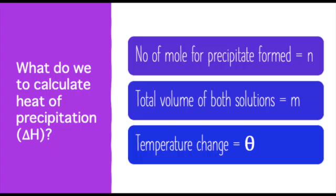When we move into the calculation steps, what items do we need? Number one: calculate the number of moles for the precipitate formed. Number two: find the total volume of both solutions as our mass. And number three: calculate the temperature change.